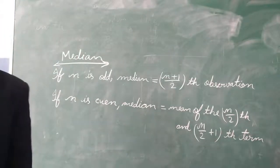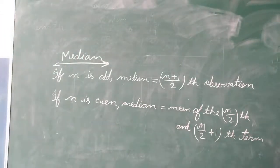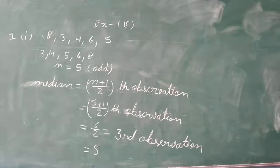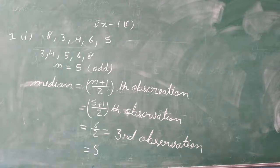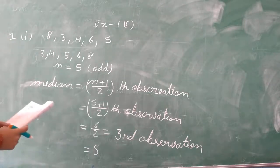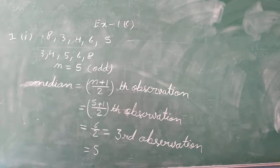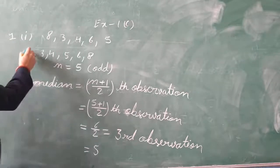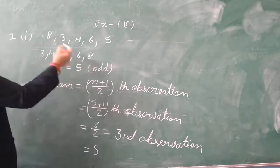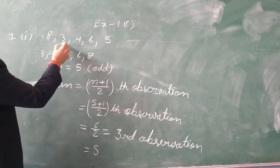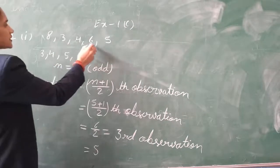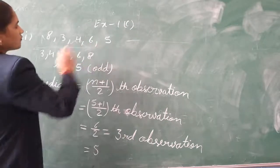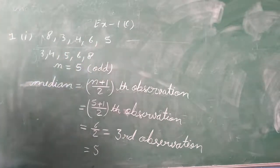Now come to the exercise. Exercise 1c, question number 1: find the median of each of the following. The first part gives us the dataset: 8, 3, 4, 6, 5.